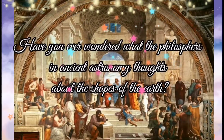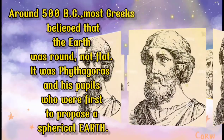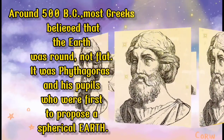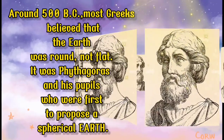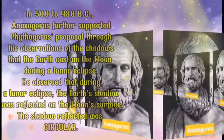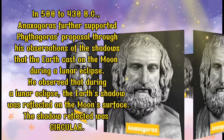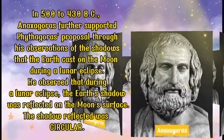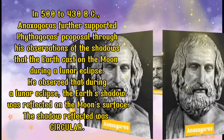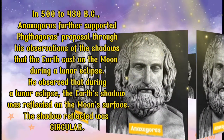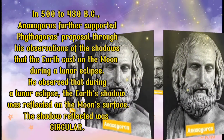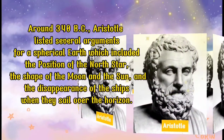Have you ever wondered what philosophers and ancient astronomers thought about the shape of the Earth? Around 500 BC, most Greeks believed that the Earth was round, not flat. It was Pythagoras and his pupils who were first to propose the spherical Earth. In 500 to 430 BC, Anaxagoras' supporters supported Pythagoras' proposal through his observations of the shadow the Earth casts on the moon during a lunar eclipse. The shadow reflected was circular.